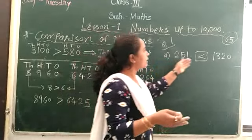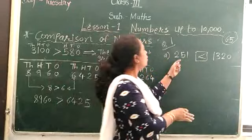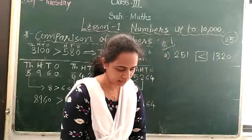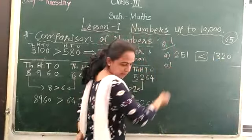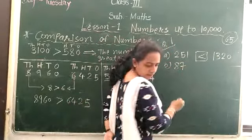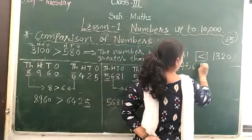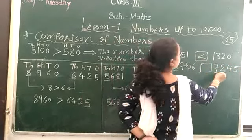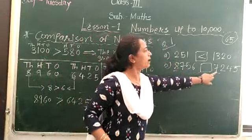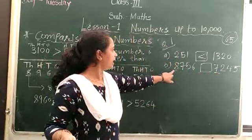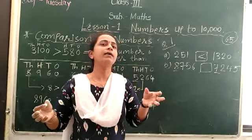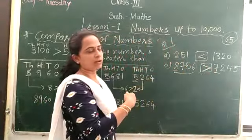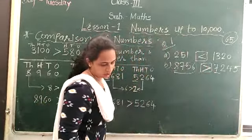Jahan pe zyada number hai, usi side pe crocodile ka mouth open hoga. So 251 is less than 1,320. Now one more example: 8,756 compared to 7,245. Compare the thousands place — here 8 and here 7. 8 is greater, so this number is greater. Our sign opens this side — crocodile mouth opens toward 8,756.